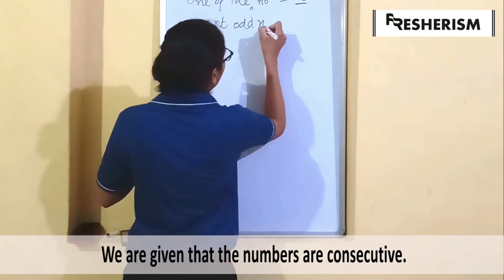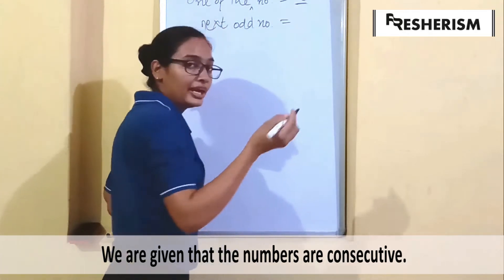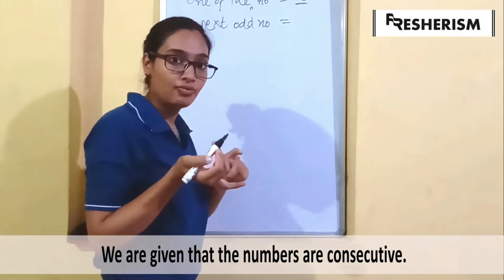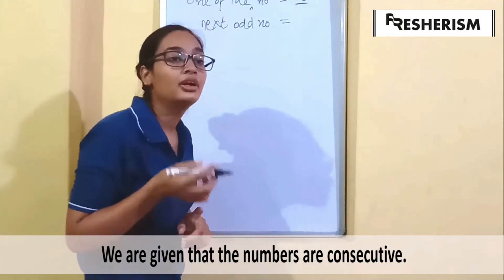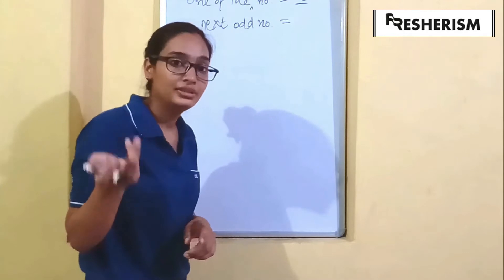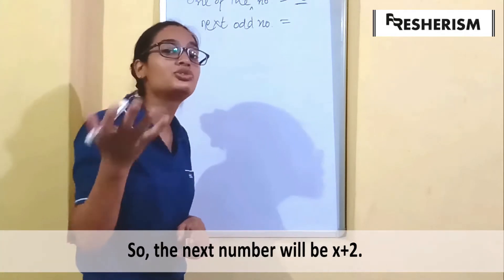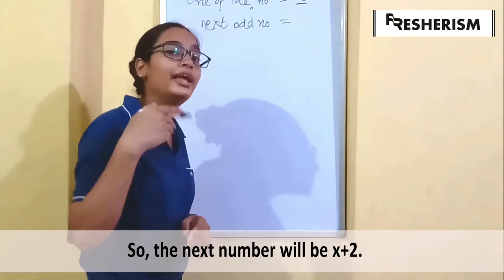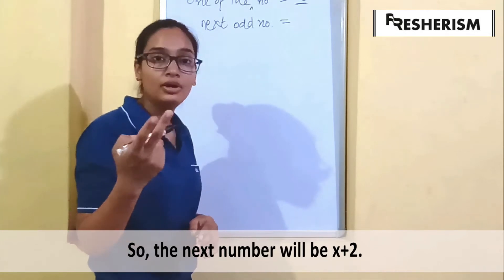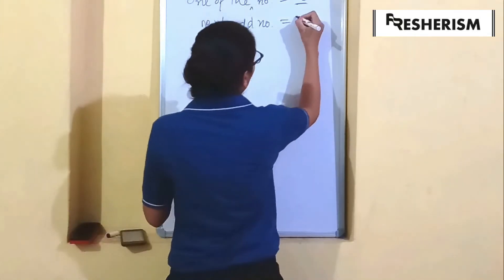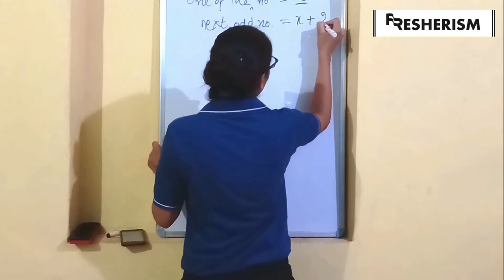If one odd number is x, then what would be the next odd number? If one is an odd number, then the next odd number would be three — that is one plus two. Whenever we have to get the next odd number, we add two. So the next odd number would be x plus two.